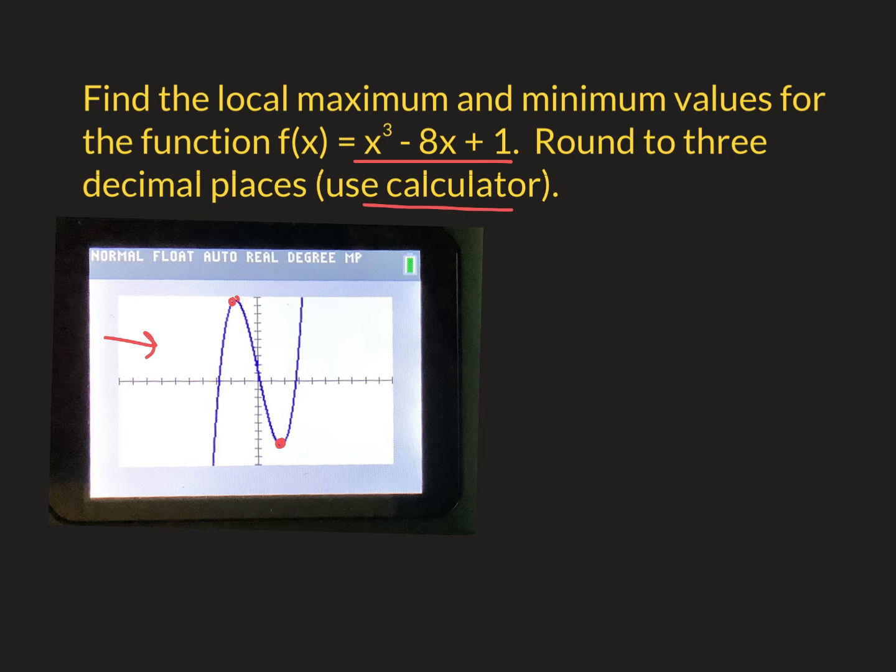All right, so I'm going to talk you through those steps real quick. First of all, after you graph it, hit graph or hit zoom 6. When you graph, we'll talk about zoom 6 on tomorrow. I want you to hit the second button, which is light blue, and hit trace. Second trace.